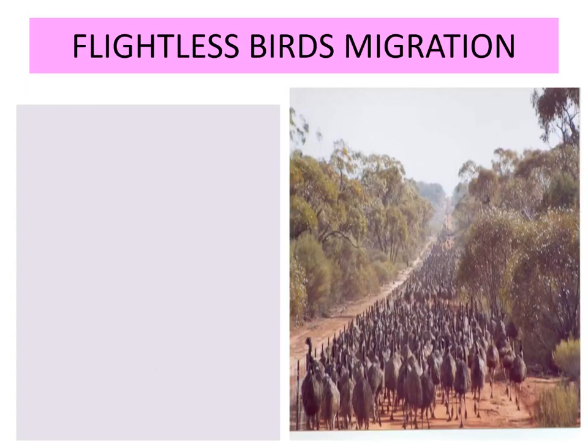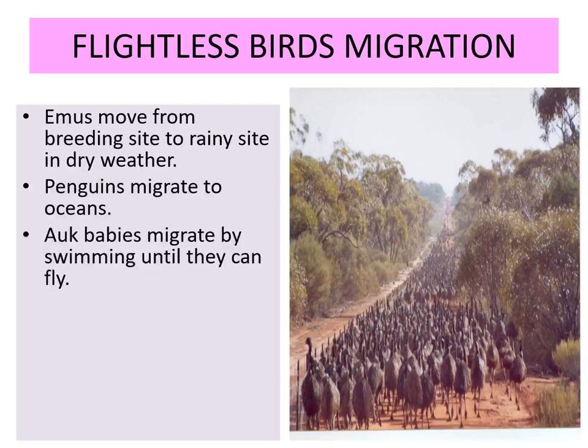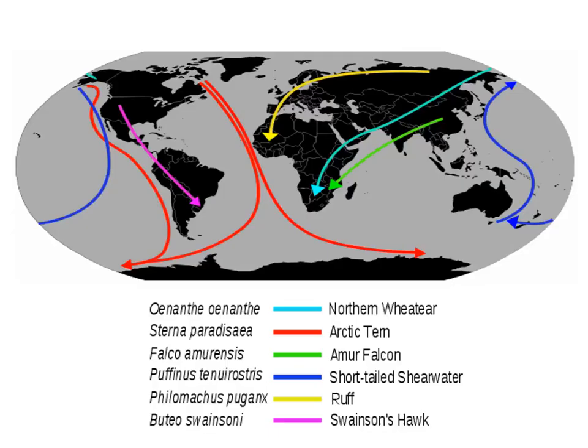Flightless bird migration: emus are flightless birds that move from non-breeding sites to rainy sites in dry weather. Penguins migrate to the ocean in groups. Hawk chicks migrate by swimming until they can fly. Seagulls, during non-breeding time, move across the whole ocean for seasonal food abundance.